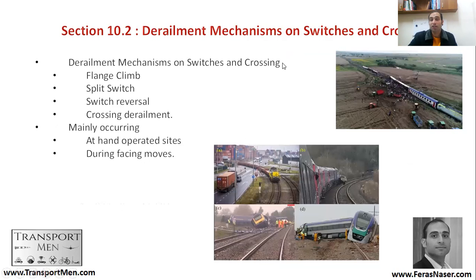Derailment mechanisms on switches and crossings — it's not only on plane line. Switches and crossings are the parts which allow the train to move from one track to another. Derailments here can happen as a flange climb, a split switch, a switch reversal, or a crossing derailment. A crossing derailment is where part of the track goes through a road, and a car, truck, or road user can be hit by a train. We call these level crossings.